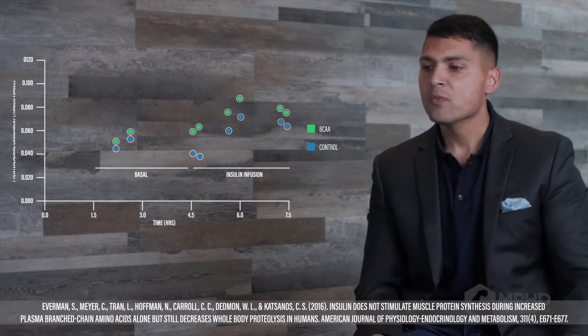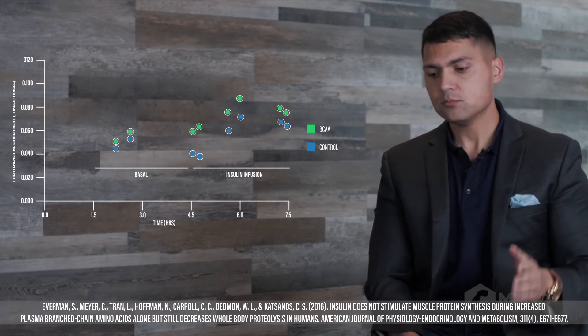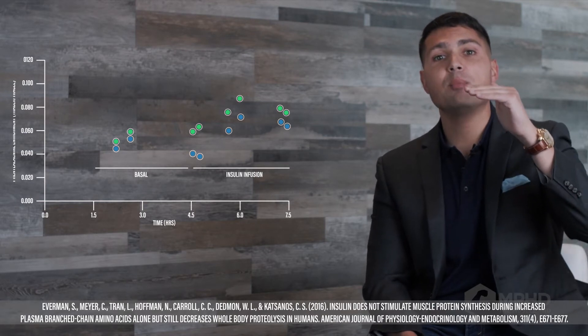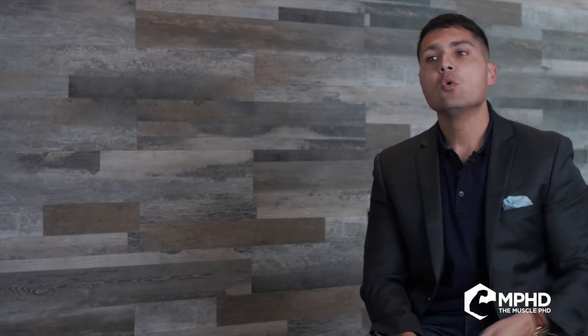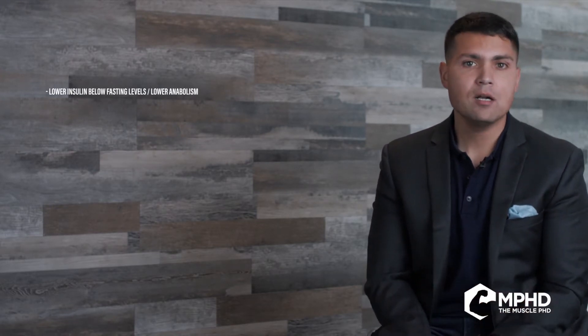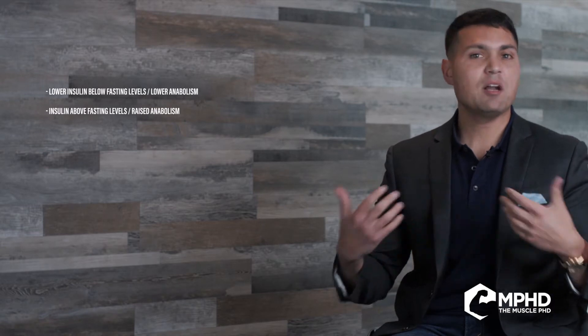Well, why is that the case? It's interesting to note that when it plateaued off was basically slightly above fasting levels. What that means is, if I lower insulin to below fasting levels, it's going to lower anabolism. But as soon as I eat a normal meal, I'm going to raise insulin and I'll be anabolic. I'll be maxing out the physiological effects of insulin.